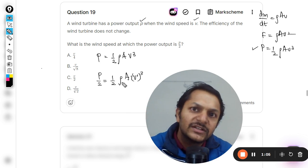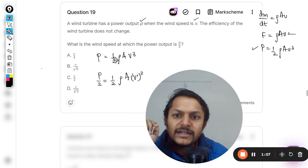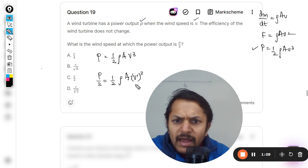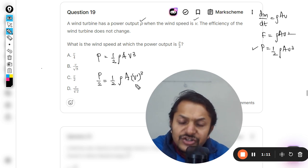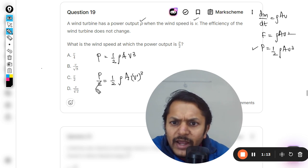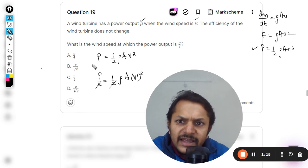And 1 by 2 is there, so everything is same, we just want to find the v dash. So it's quite easy, we can cut this thing and this P and this P, these two equations can be equated.